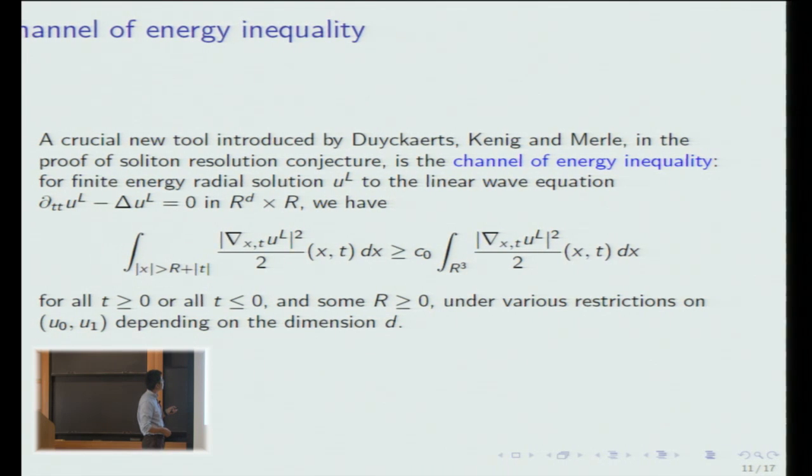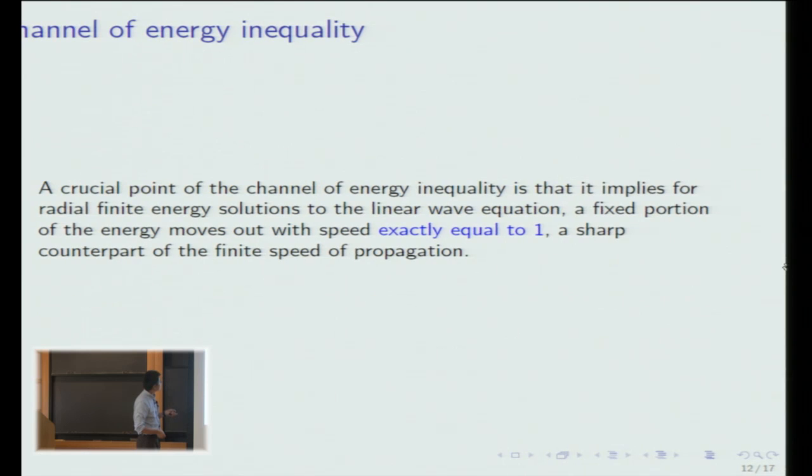That is a simple property for the linear wave that we can all understand. So that is the so-called channel of energy inequality. So take a radial solution to the linear wave equation. And then you look at the energy outside of this growing light cone. Now this energy is bound from below by a fixed portion of the total energy. So this is true for all positive times or negative times. And the distinction between all positive times and negative times is important because you have possibly incoming waves or outgoing waves. For outgoing waves, this will be true for positive times, or incoming waves it will be true for negative times. And what this tells us is that for the linear radial solution, you have a fixed portion of the energy which moves out with speed exactly equal to one. And that's not finite speed propagation because finite speed propagation tells you the energy moves out with speed at most one. And now this inequality tells you that a fixed portion of the energy moves out with speed exactly equal to one. And that turns out to be very important.